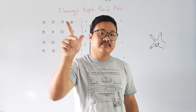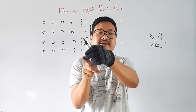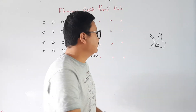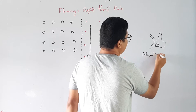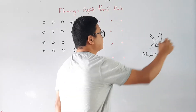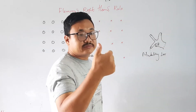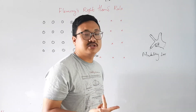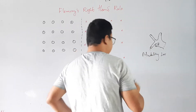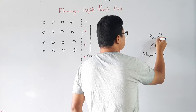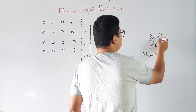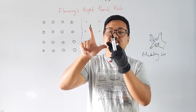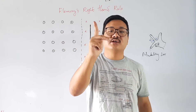We take the right hand and all three fingers — the thumb, index finger, and middle finger — and align them perpendicular to each other. All of them are mutually perpendicular to each other. The angle between each pair is 90 degrees: between thumb and index finger, between index and middle finger, and between thumb and middle finger.